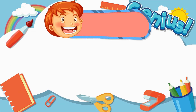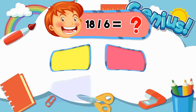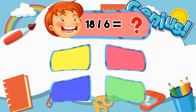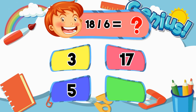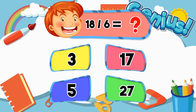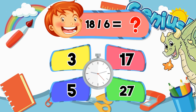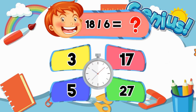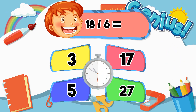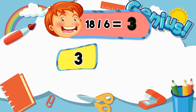What is 18 divided by 6? 3, 17, 5, 27, 3.